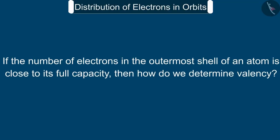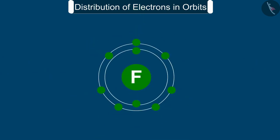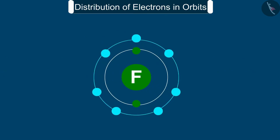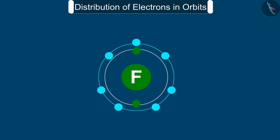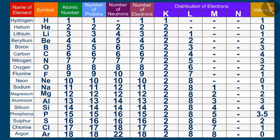But if the number of electrons in the outermost shell of an atom is close to its full capacity, then how do we determine valency? In this case, valency is obtained in another way. For example, the fluorine atom has seven electrons in the outermost shell and its valency could be seven. But it is easier for fluorine to gain one electron instead of losing seven electrons. Hence its valency is determined by subtracting seven electrons from the octet, and this gives a valency of one for fluorine. Therefore, we can say that an atom of each element has a definite combining capacity called its valency.